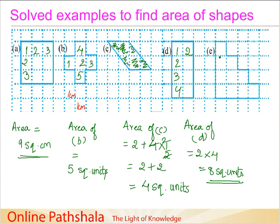And then we want to find out the area of figure E. So in this case, again we count the squares. So we have 1, 2, 3, 4, 5, 6, 7, 8, 9 and 10. So, area of figure E or area occupied by figure E is 10 square units.